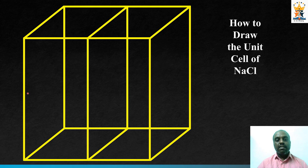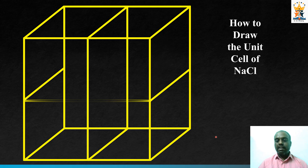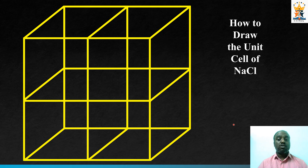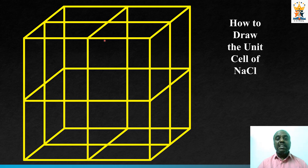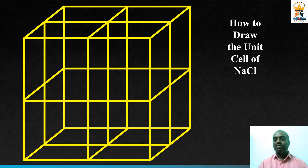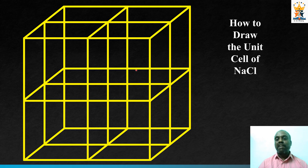Connect the centers of the remaining edges so the cube is divided into four halves, and then into eight halves. Next, connect the face centers: connect the top and bottom face centers, then the left and right face centers, and then the front and back face centers. You will end up with a perfect cubic lattice.